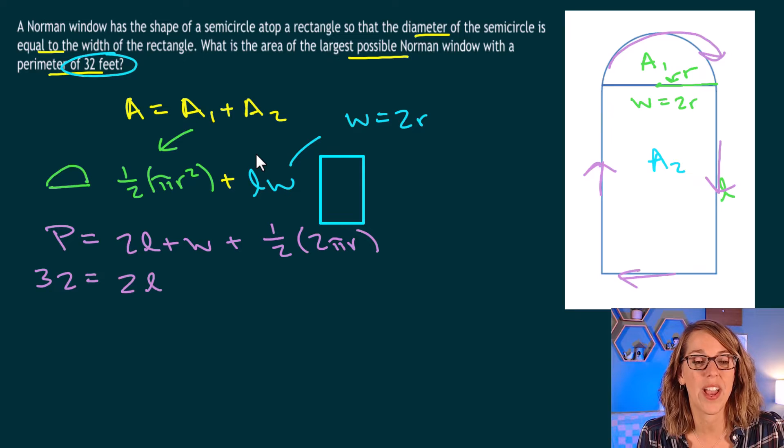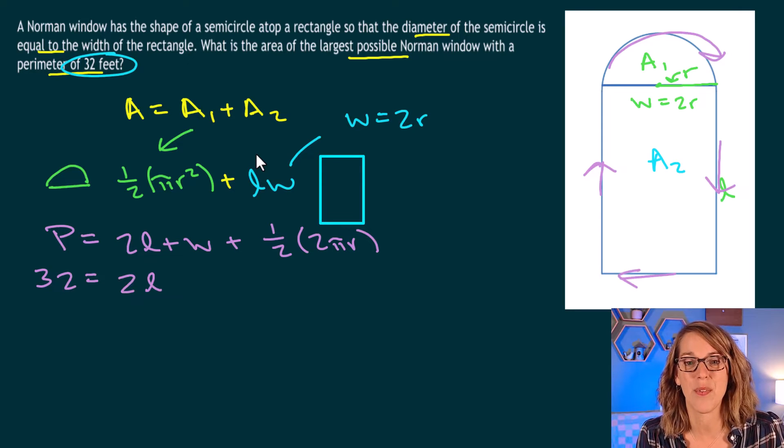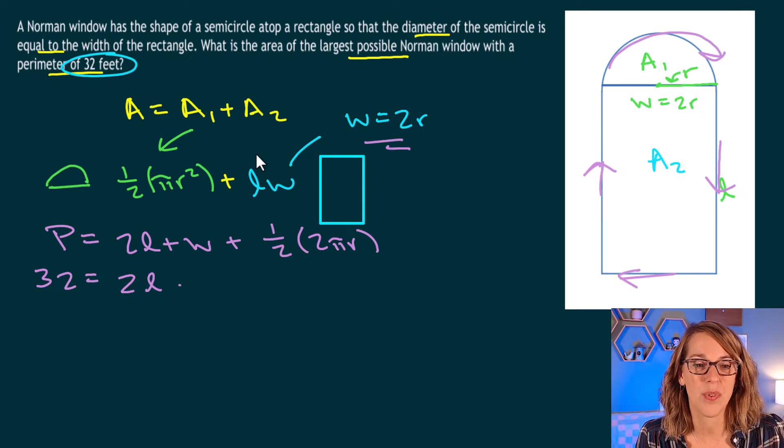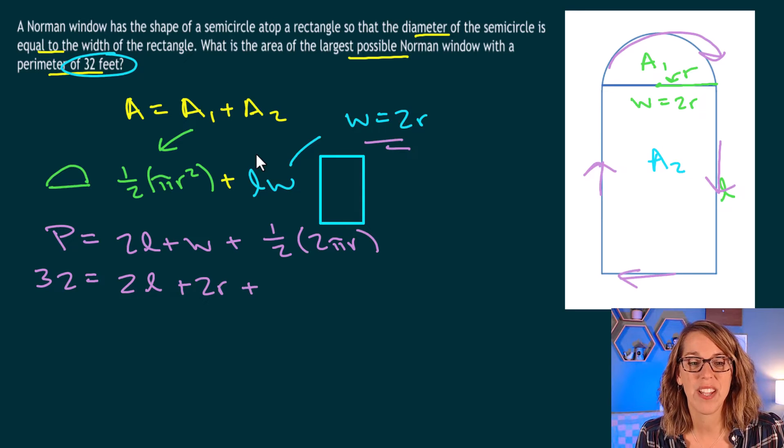Now this is equal to 32. So as I put the 32 in here, I've got 32 is equal to 2l. L is what we're going to be solving for. w is equal to 2r, so plus 2r, plus, I can cancel these 2s, and I get pi times r.